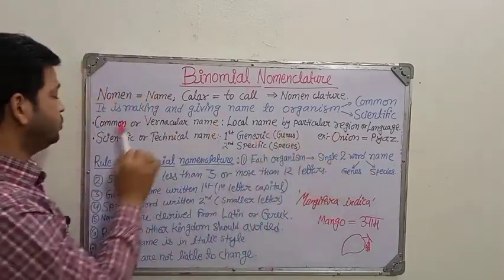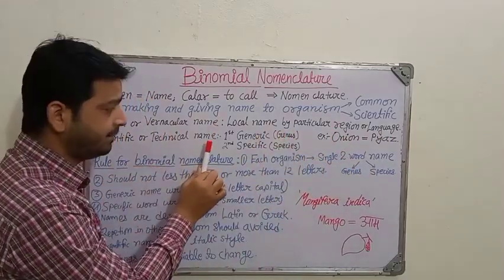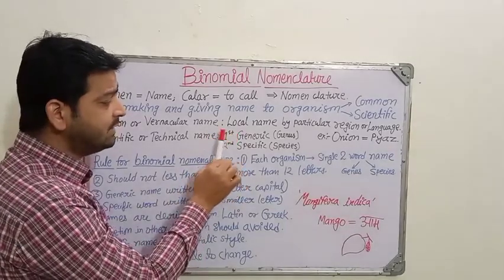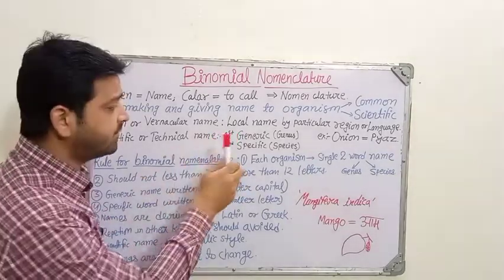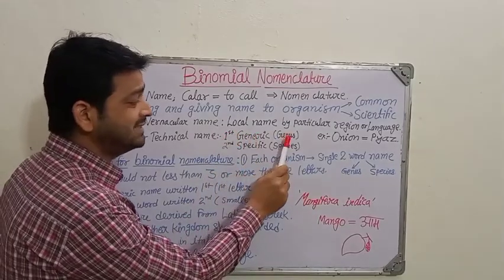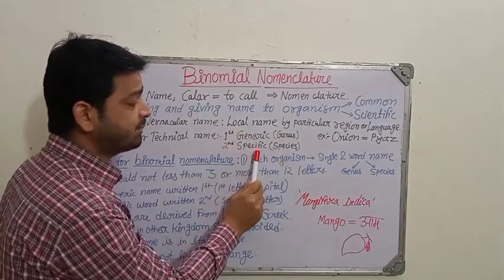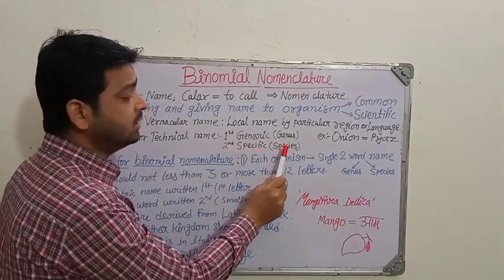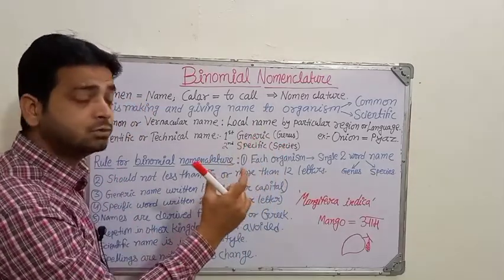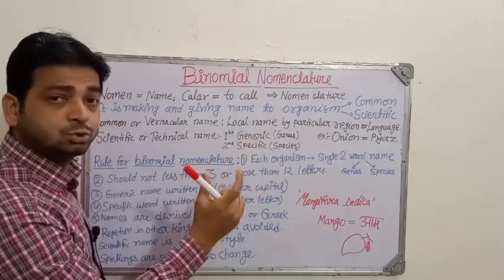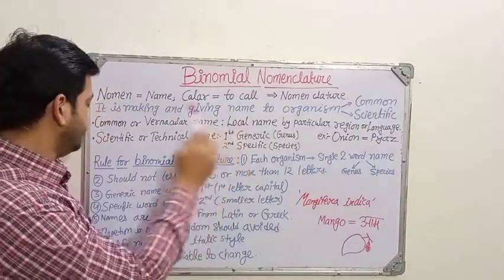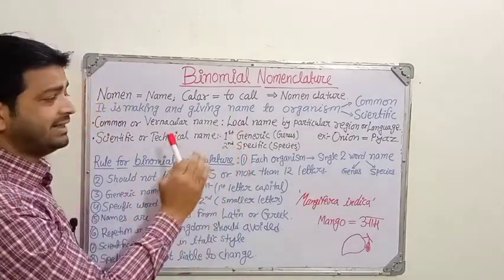Coming to the scientific or technical name, it is composed of two words. The first is the generic name, called the genus, and the second is the specific name, called the species. Together, these two words form the scientific name or technical name.